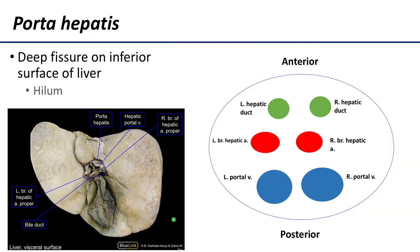The porta hepatis is a deep fissure on the inferior surface of the liver situated between the quadrate and the caudate lobe posteriorly. It contains the portal veins, the left and right branches of the hepatic artery, and the right and left hepatic ducts. Additionally, you'll have the hepatic plexus of nerves and some lymph vessels in association with the porta hepatis.